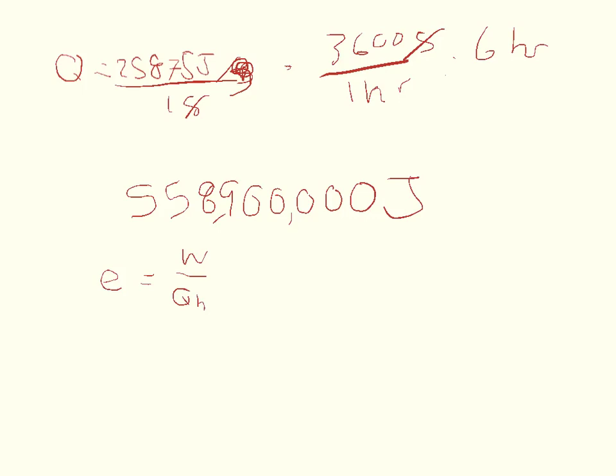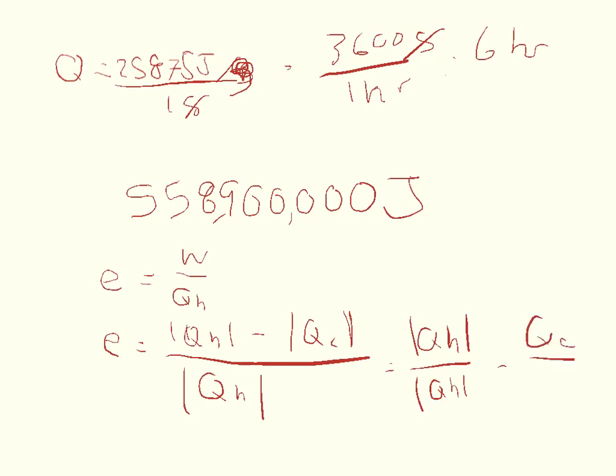But we've also expanded that, and we've said that energy is equal to the absolute value of the energy from the hot reservoir minus the absolute value of the energy to the cold reservoir, divided by the absolute value of the energy from the hot reservoir. And so we said that we could make that equal QH over QH minus QC over QH, and what this would become is 1 minus QC over QH.